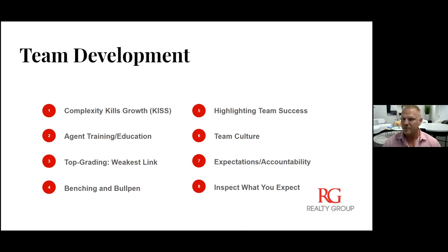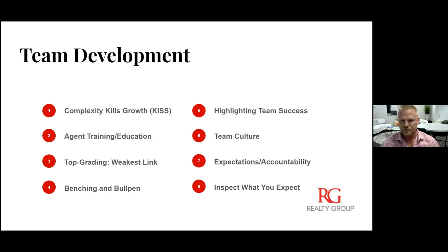Top grading is another key element. We keep about eight to ten people on the team at a time — with 700 agents, not every single one is going to work well with leads. You need to understand what personality types work with leads. If you have a profile of what a great lead agent looks like, that helps tremendously. If you've got ten people on your team and an eleventh that looks really good, you can eliminate the weakest link and still keep the same ten.